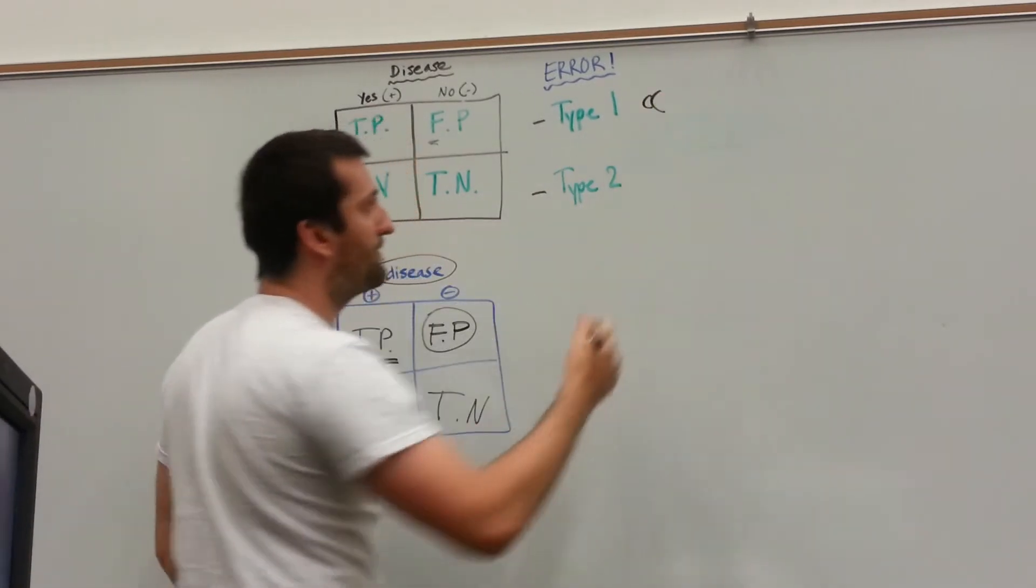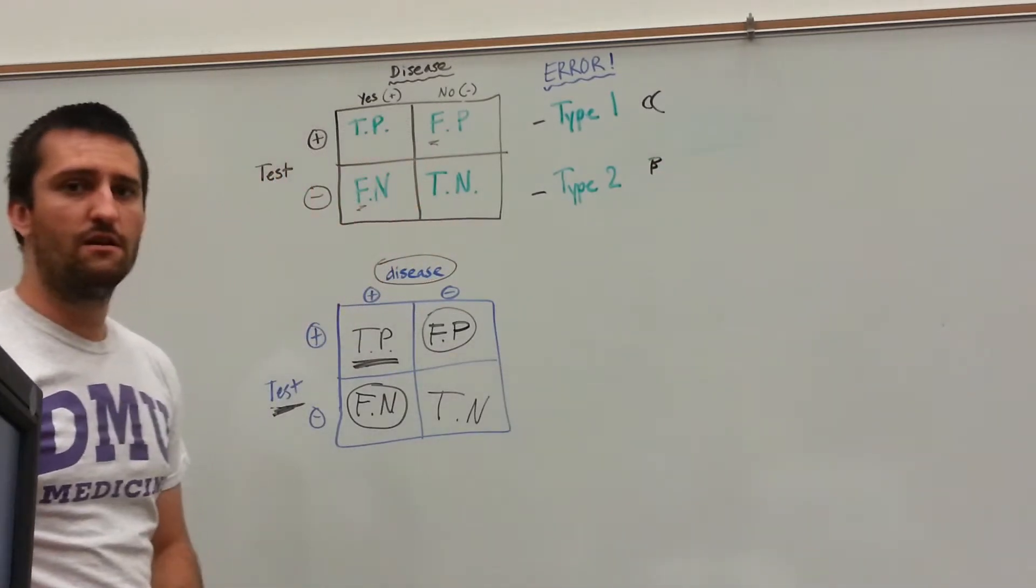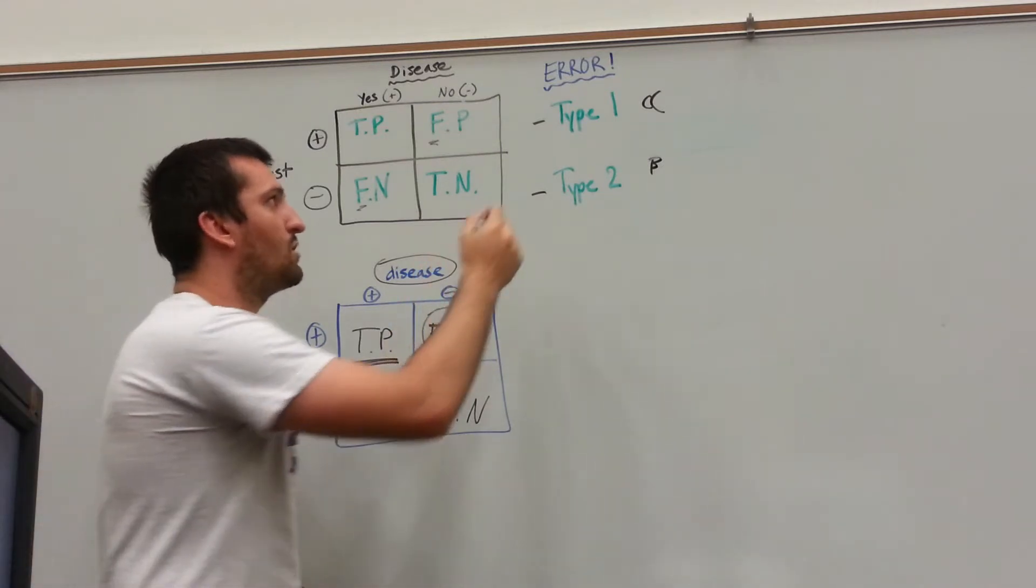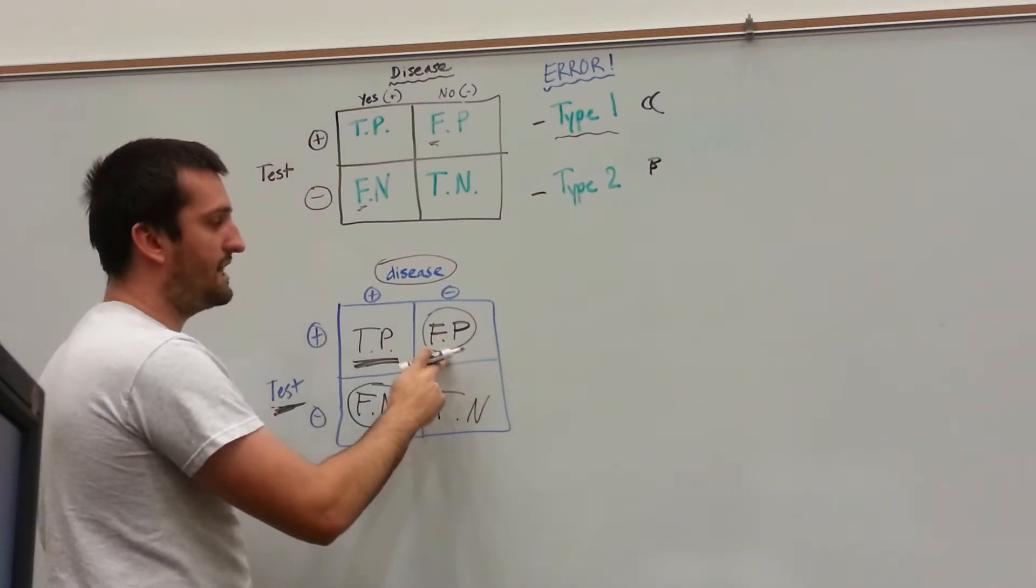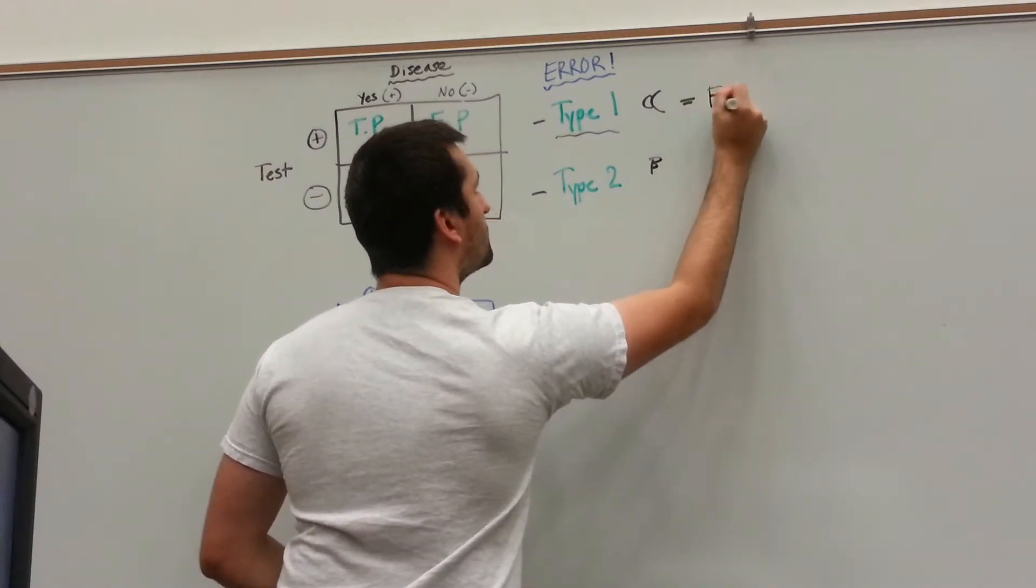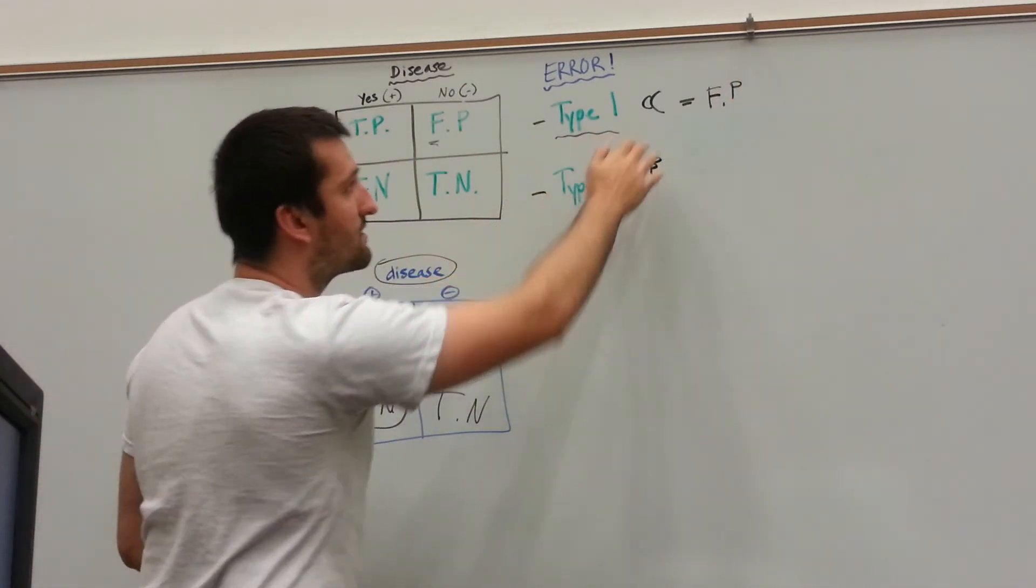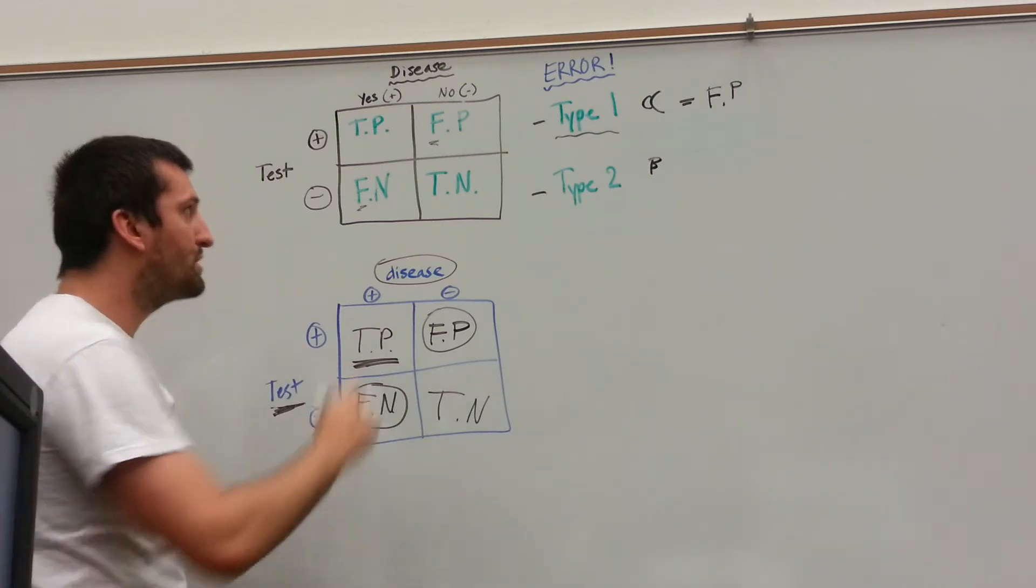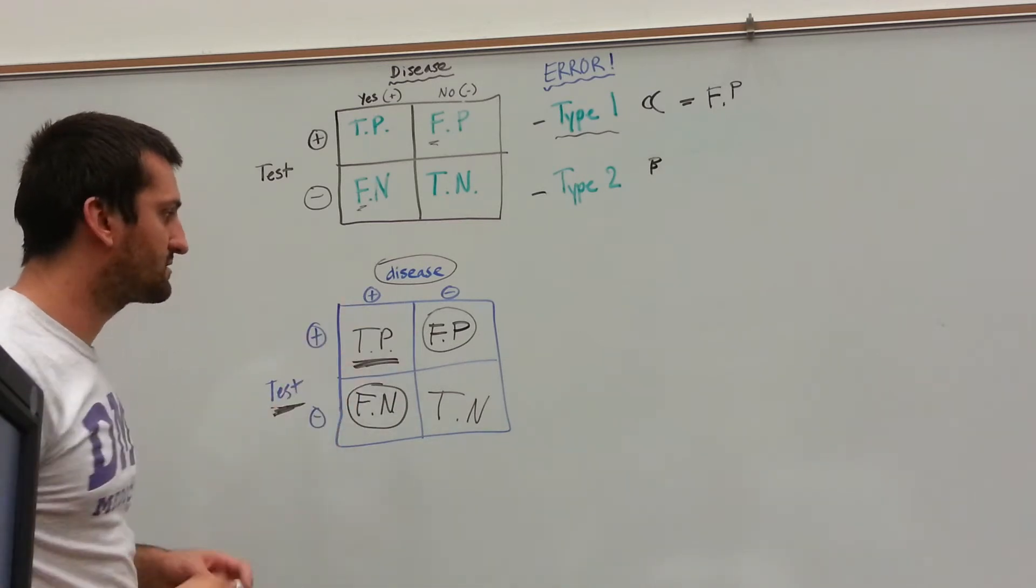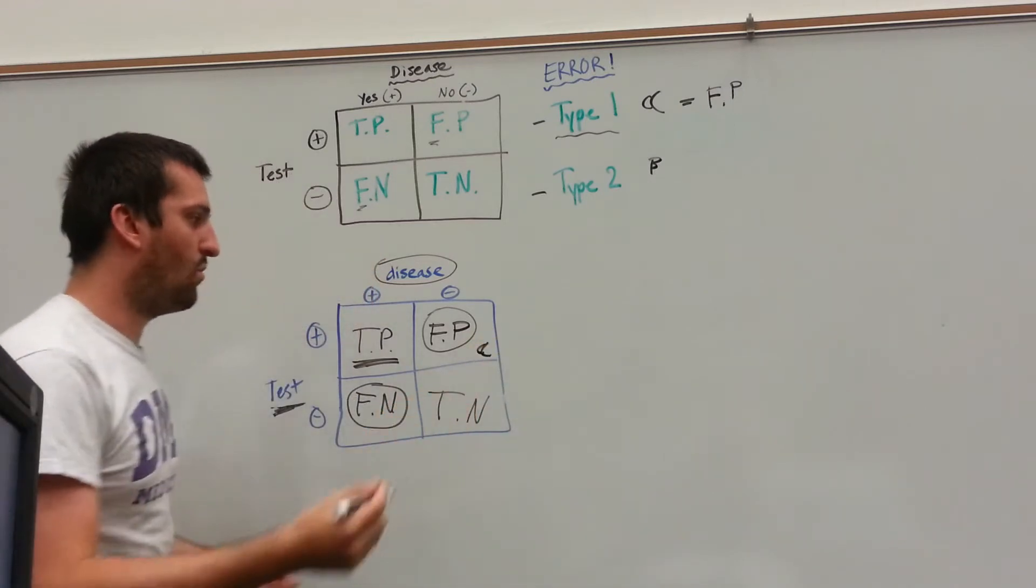Type 1 can also be called alpha, an alpha error, and then a type 2 can be called a beta error. It just depends on how the question is going to be formatted. So a type 1 error. This is going to be a false positive error. So there are two different ways that you can remember this. You can either think an alpha error is going to be a false positive, or you can simply remember it's going to be in the upper right quadrant of this Punnett square. Either way, this is going to be your alpha or type 1 error.